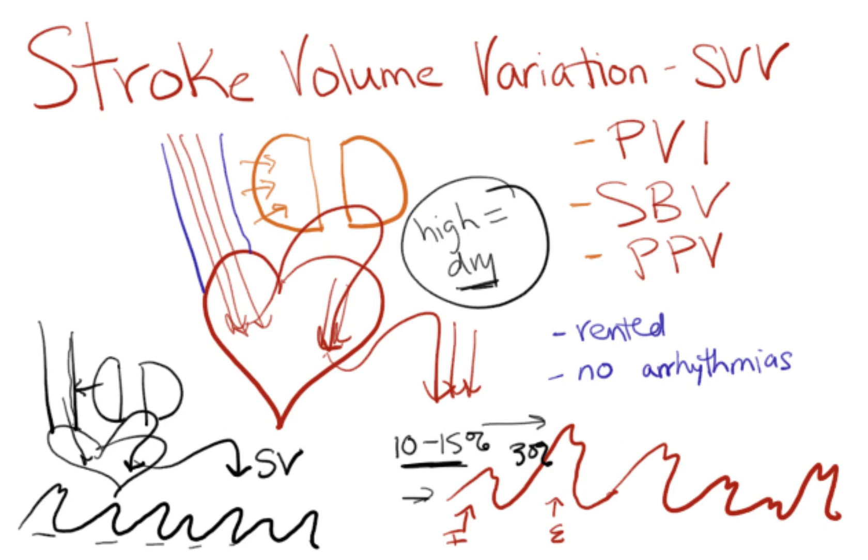Well first, when you're vented, this whole concept is based on how much pressure your lung puts on your vena cava and how that can be a reflection of your fluid status. So when a patient is vented, they're getting relatively consistent tidal volumes, relatively consistent PEEP, and relatively consistent pressure against their vena cava.